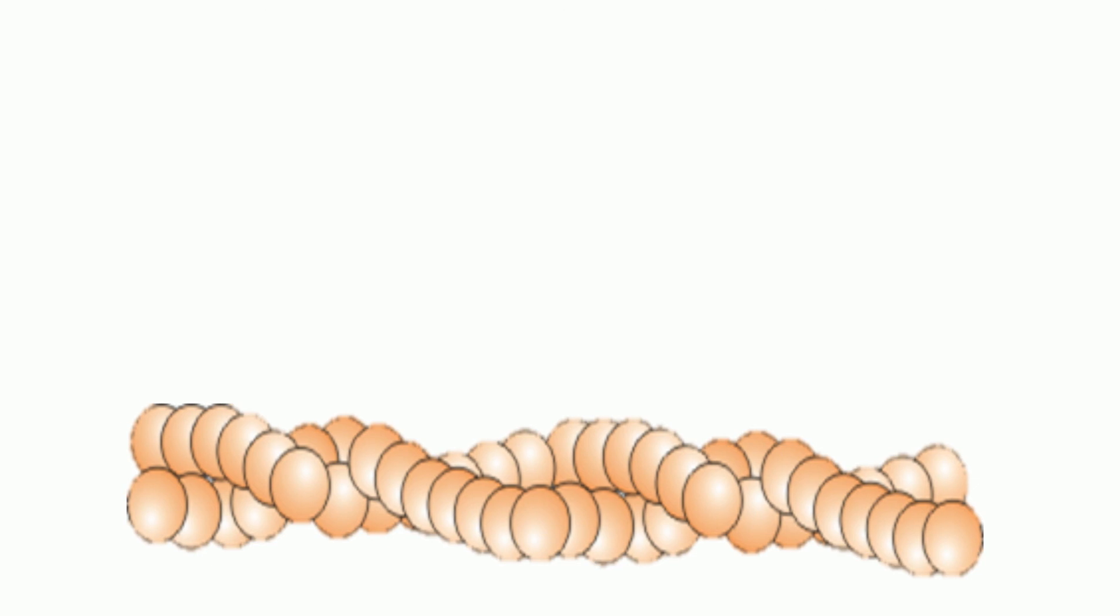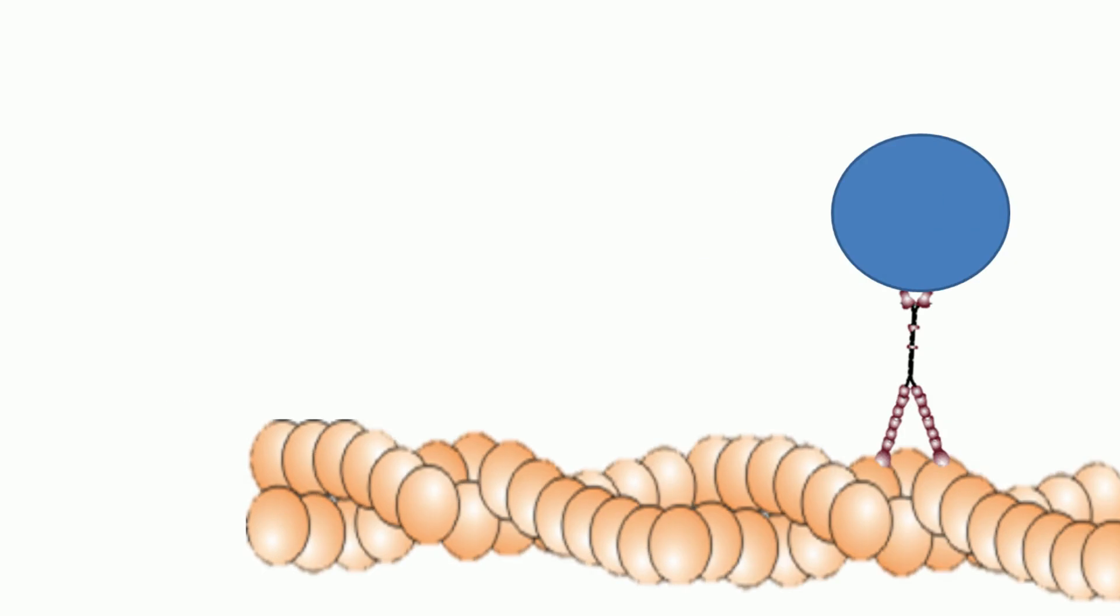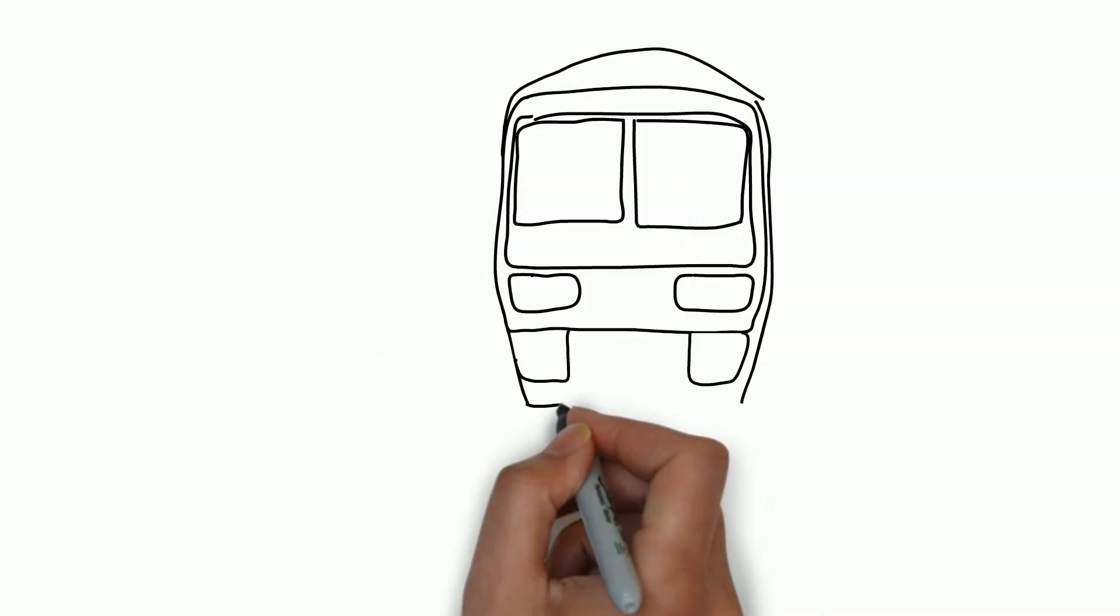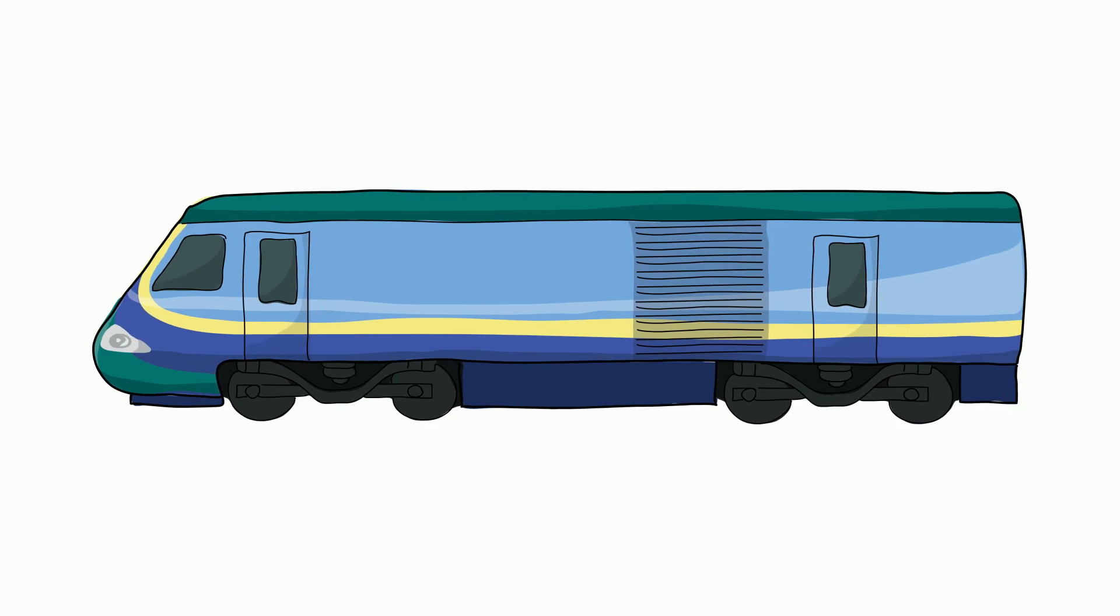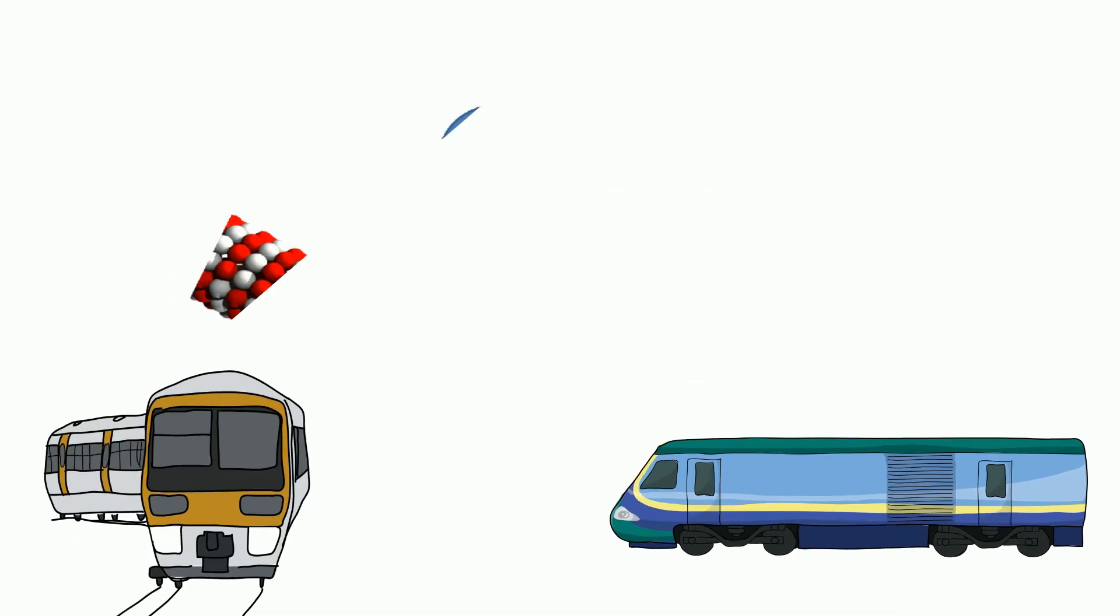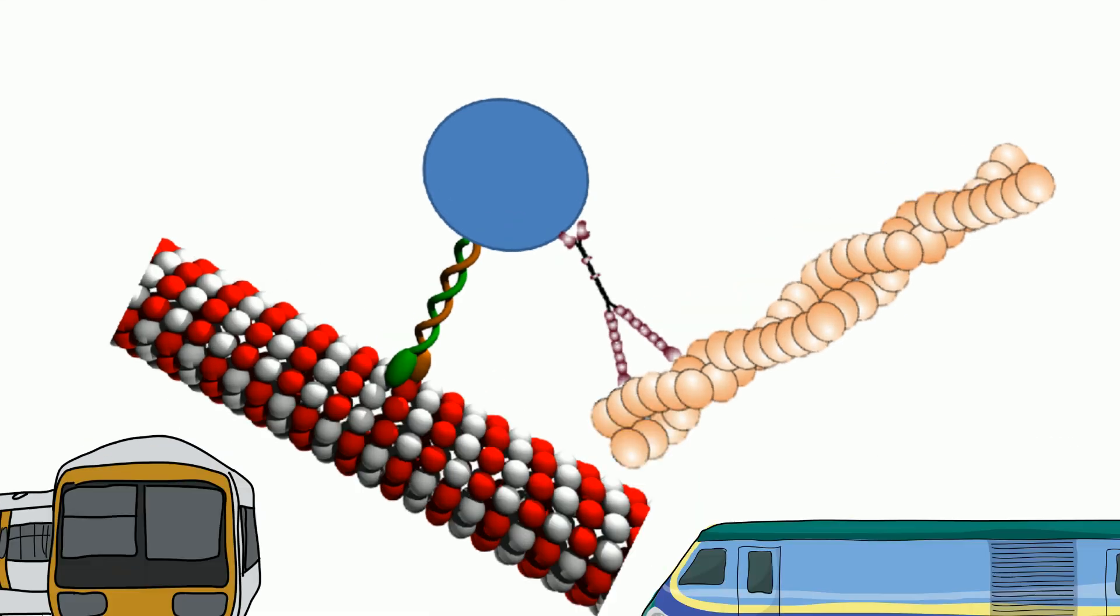Lastly, microfilaments are also needed for vesicle transport in a cell. Just as your transport route home can involve taking the MRT and LRT, so microtubule and microfilament networks can work together for transport within the cell.